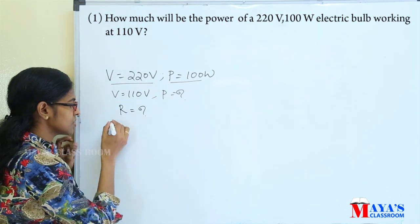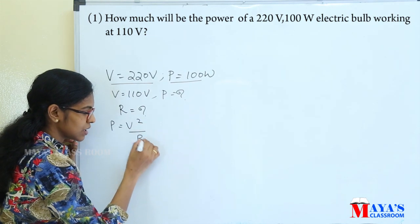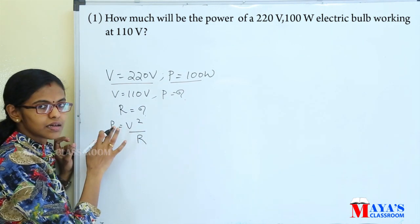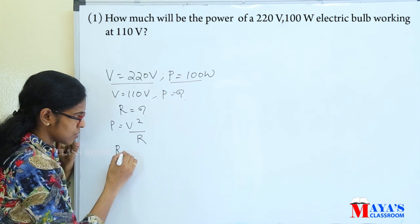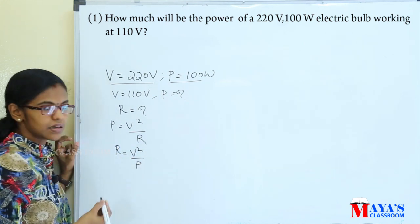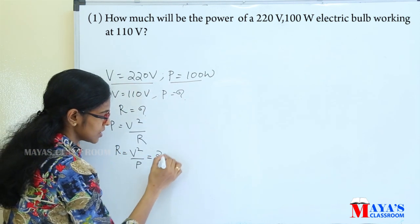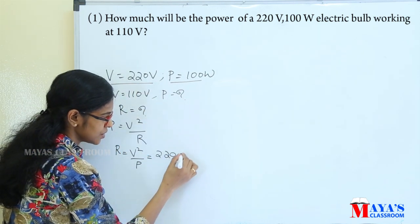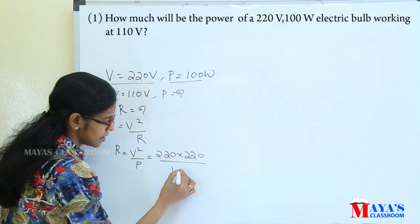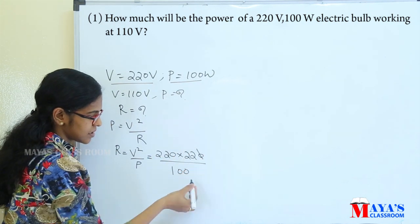So, we will learn that P is equal to V squared by R, then we will learn that P is equal to V squared by R. So, R is equal to V squared by P, then that is equal to V squared by 220 into 220, then divided by power 100 watt, then we will cancel it.